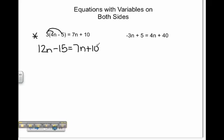We will now move all the variables to one side of the equation and the constants to the other. Let's start by subtracting 7n on both sides of the equal sign. This gives us 5n minus 15 equals 10.